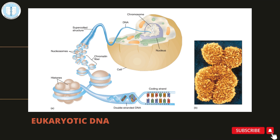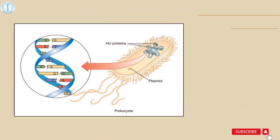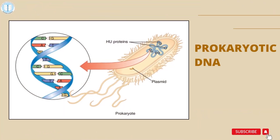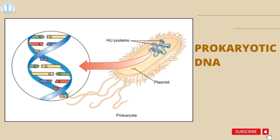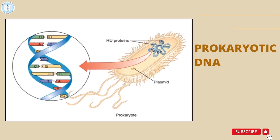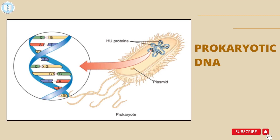Prokaryotic cells, on the other hand, do not contain histone proteins in their nucleic acids. Instead, they have proteins known as HU proteins. The enormous nucleoprotein molecule also has ends that overlap and interact with one another to form a loop. The plasmid, a second little loop of DNA, includes genes that are not necessary for a cell to function on a daily basis.